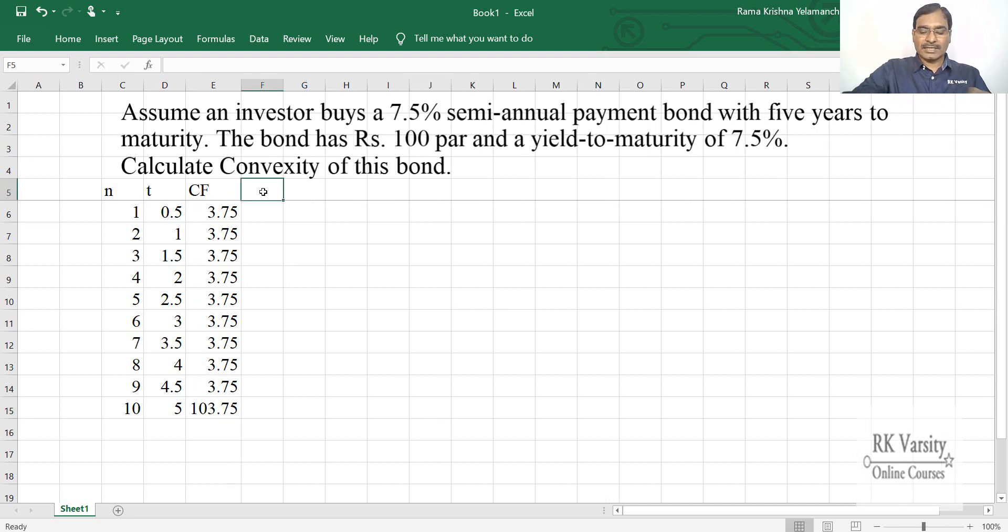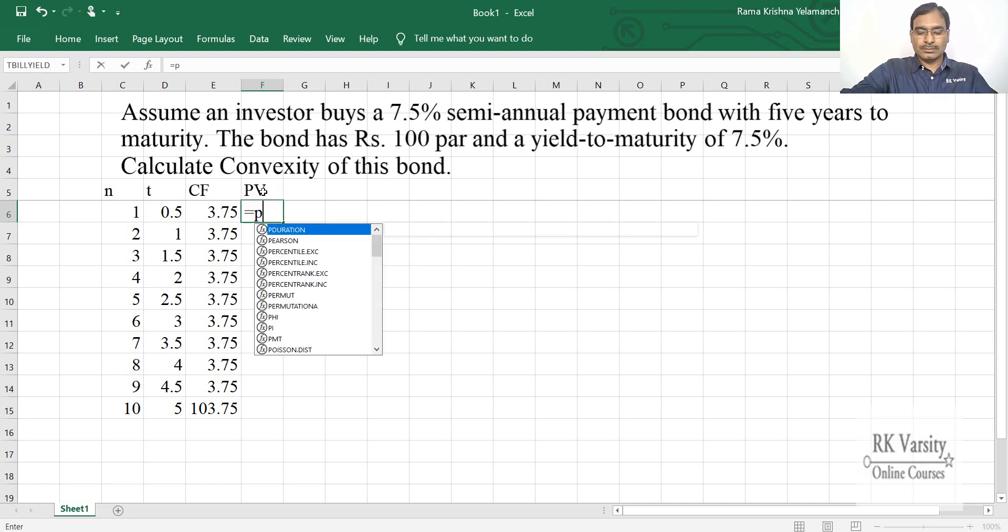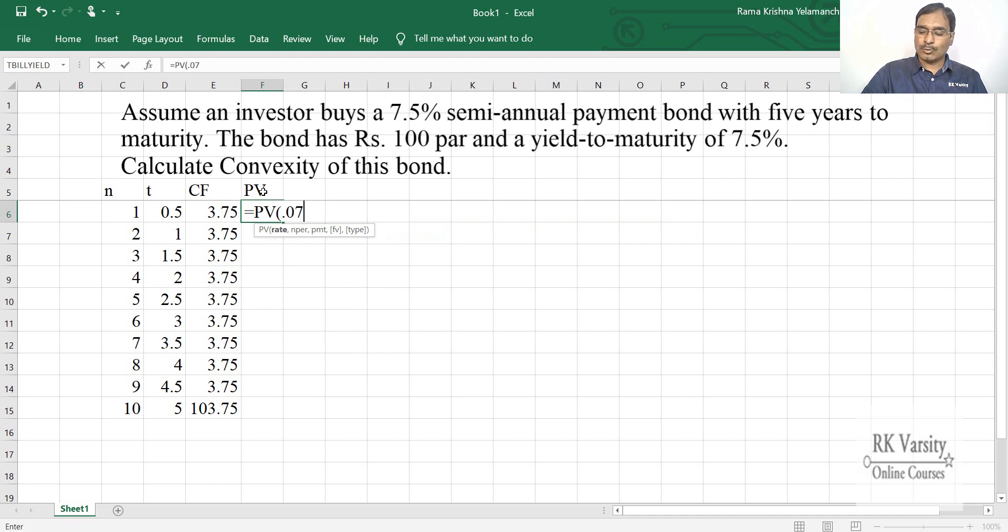Now we calculate the present value of these cash flows. So present value of cash flows is, this equals to present value of cash flow rate is 0.075. That is your yield to maturity. For this bond, the coupon payment as well as the yield to maturity both are same. So 0.075 upon 2, because this is a semi-annual coupon payment bond. So place comma, then period is N. So do not confuse this with the T. T is a time period when you are going to get your coupon payments, whereas the N indicates the number of time periods.